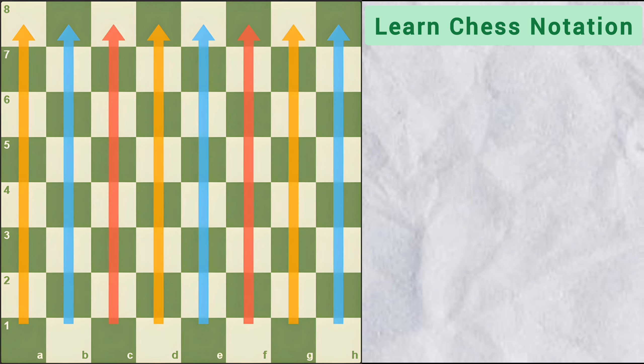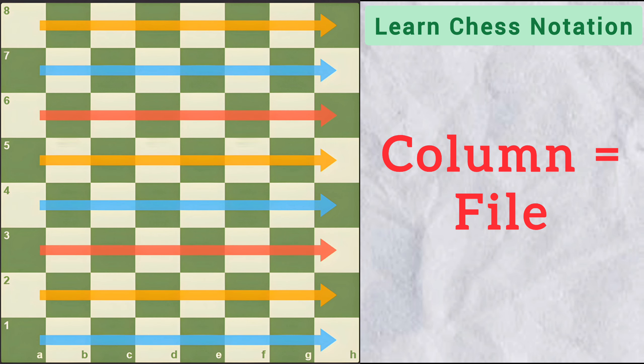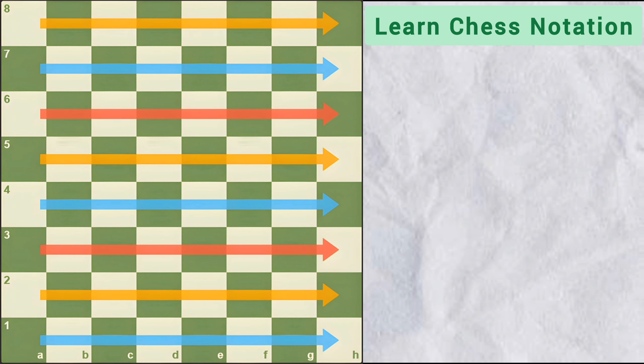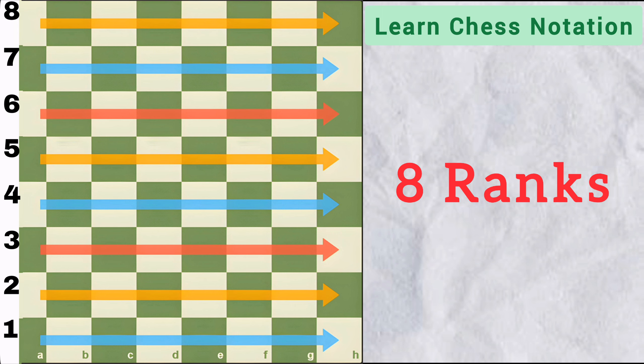Each column on the board is called a file and each row is called a rank. So there are 8 files starting with the letter A from left side and going all the way to the letter H on the right side. Similarly, there are 8 ranks on the board labeled with the number 1 to 8 in the increasing order.